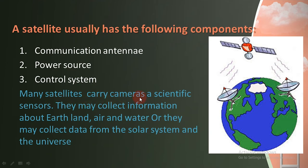Many satellites carry cameras and scientific sensors. They collect information about Earth, land, air, and water. They can collect information about the galaxy, the solar system, and the universal level. They transfer data to Earth.